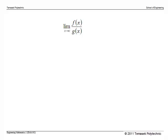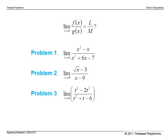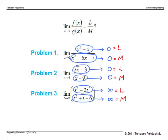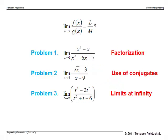A typical past year limit problem takes this form. The question is: is this limit equal to l over m — the limit of f divided by the limit of g? Looking at three example problems, we realize this is not so. In the first two problems, the limit m equals zero, which violates the condition for the division rule. In problem three, both limits l and m are infinite, so again we cannot use the division rule. To get around this, we try to change the function expression to a different form. The techniques we will use are factorization, the use of conjugates, and considering limits at infinity.